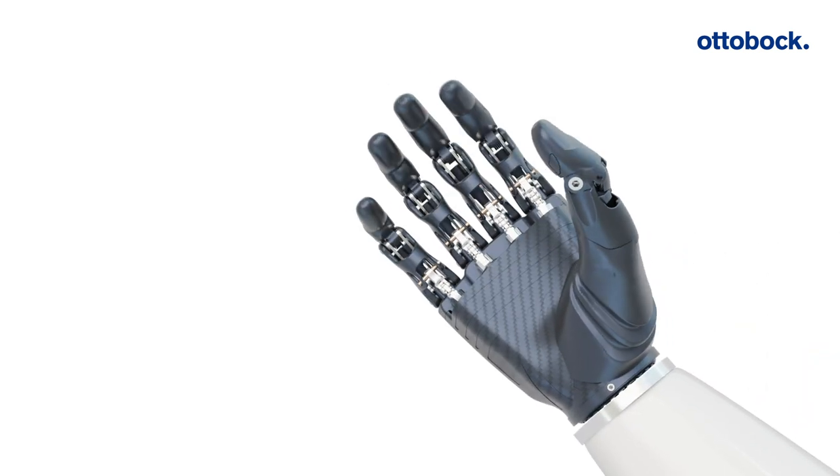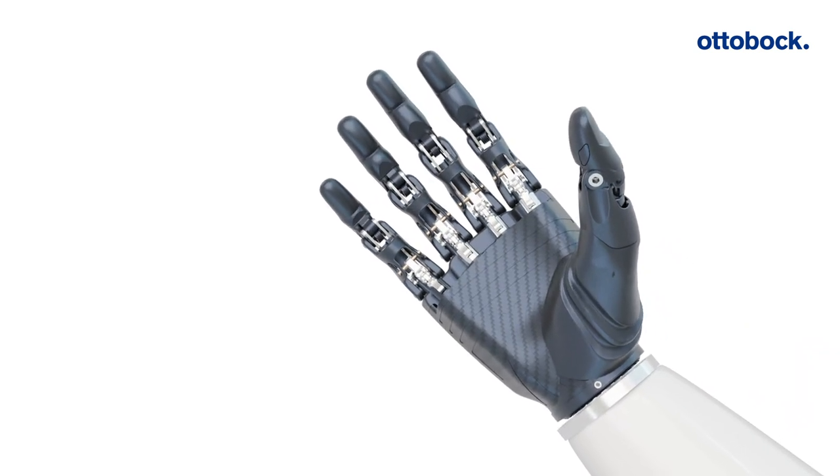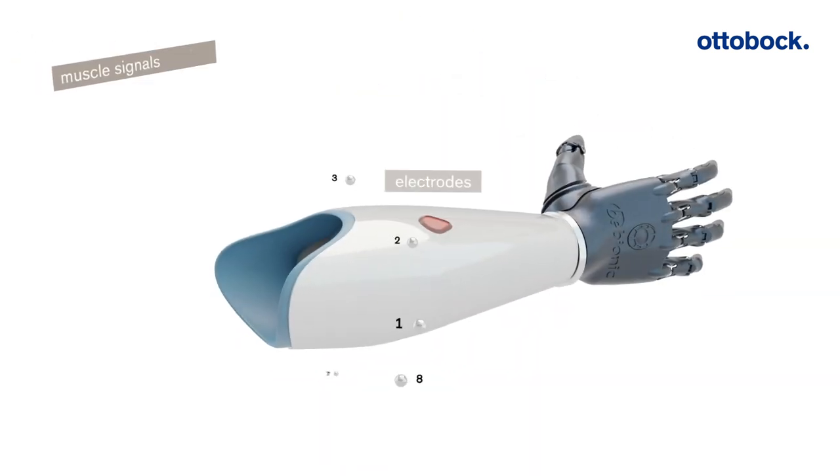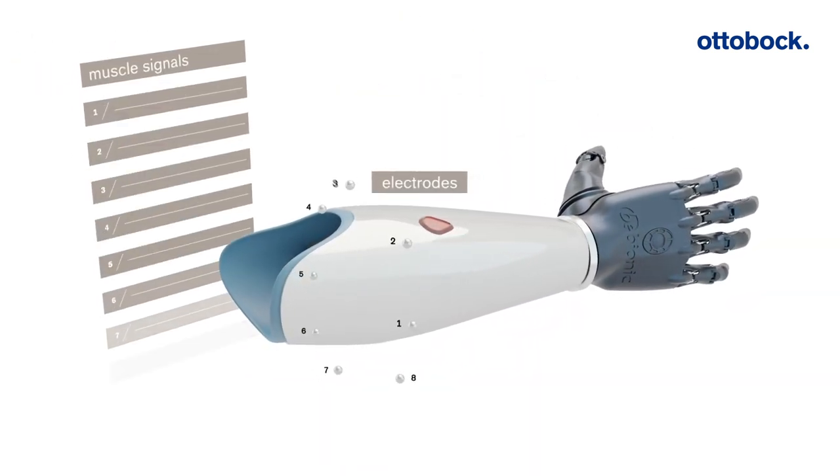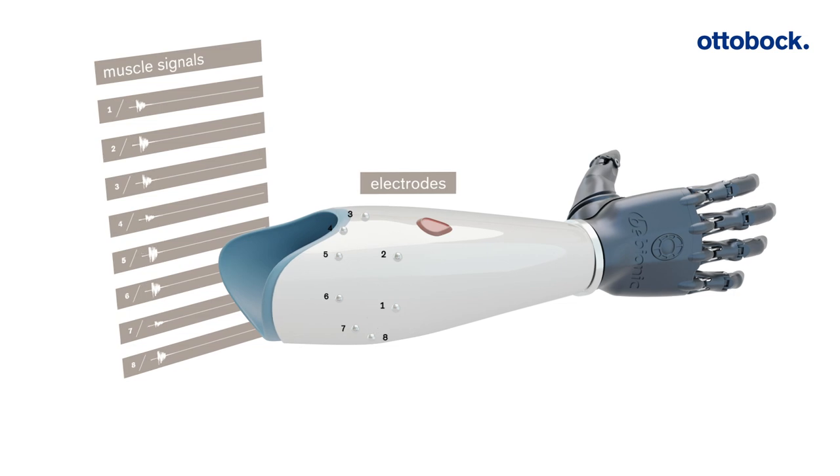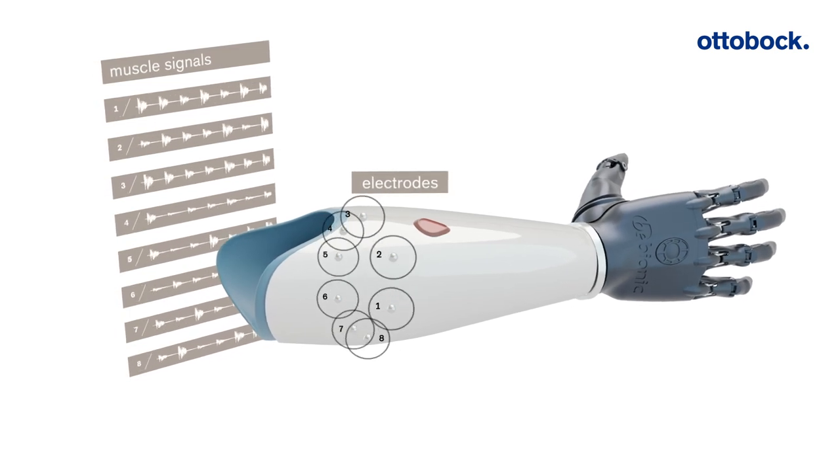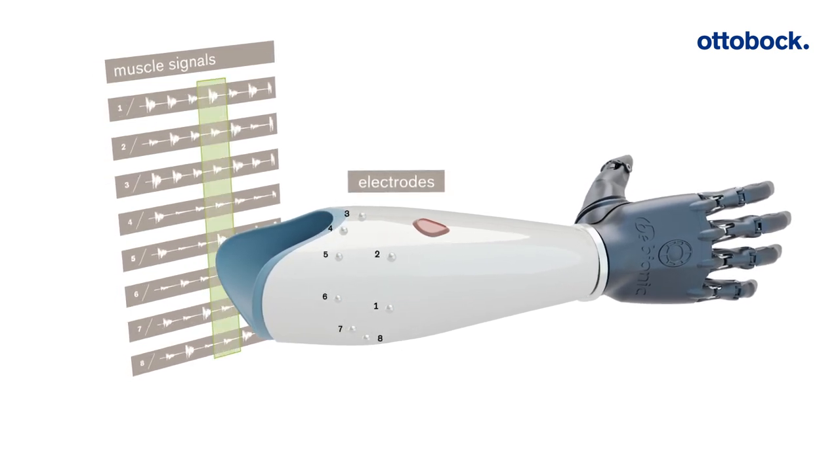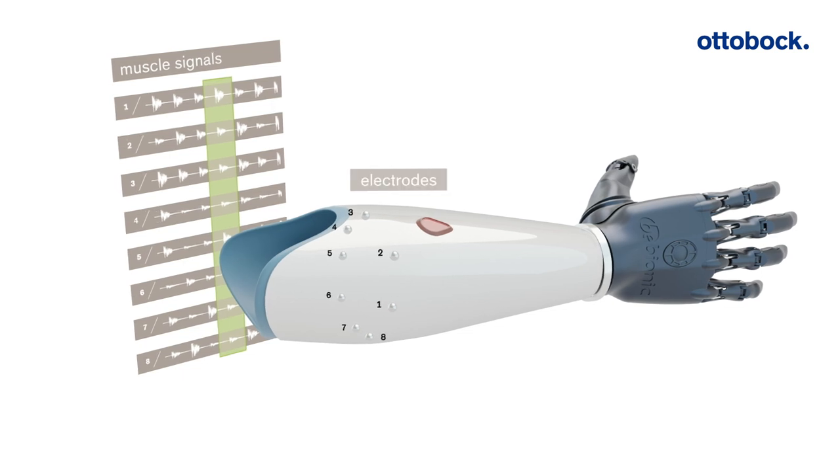MyoPlus pattern recognition controls terminal devices with artificial intelligence. The MyoPlus prosthesis control uses up to eight electrodes to measure incoming signals of the forearm and derives patterns that are characteristic for individual movements.